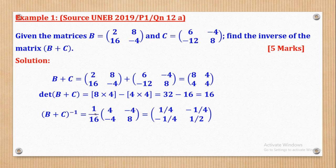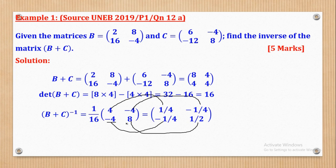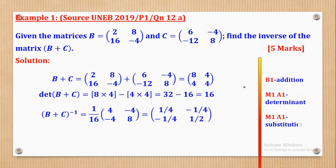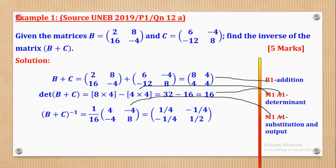Using scalar multiplication: 1 over 16 will multiply each entry inside the matrix. 1 over 16 times 4 gives positive 1 over 4; 1 over 16 times negative 4 gives negative 1 over 4; 1 over 16 times negative 4 gives negative 1 over 4; and 1 over 16 times 8 gives 1 over 2. That is our inverse. B1 was for the addition, M1 for substituting in the formula, A1 for the determinant, M1 for the adjoint substitution, and A1 for the final output.